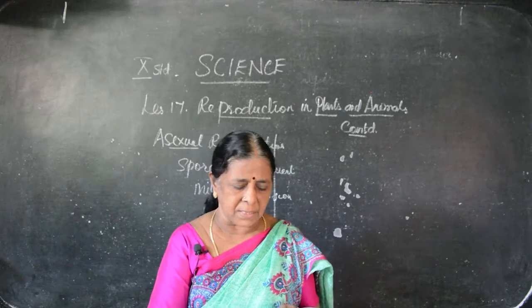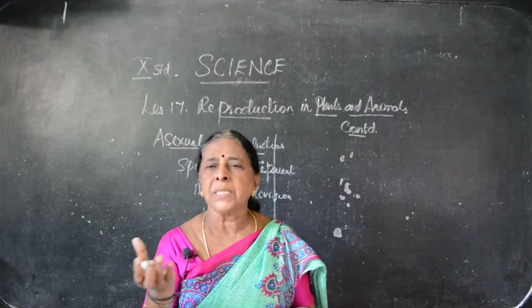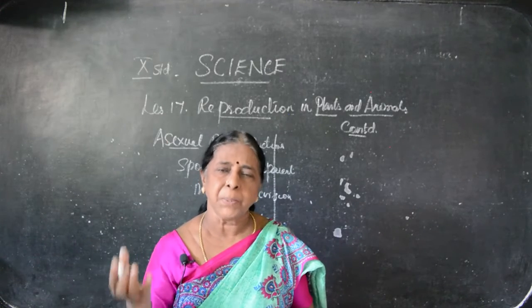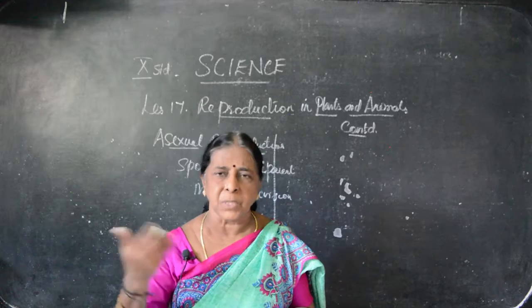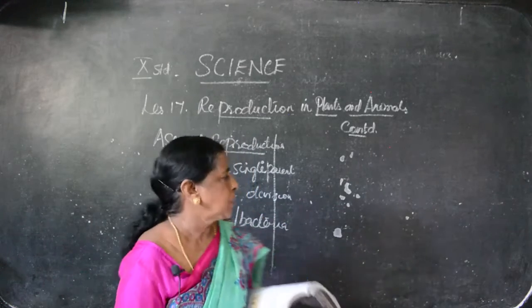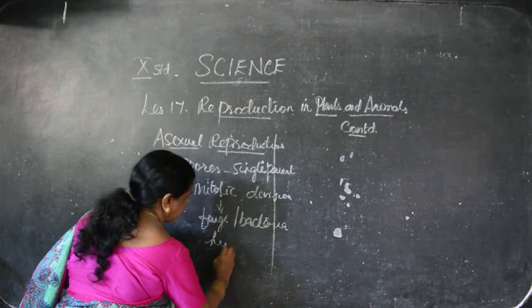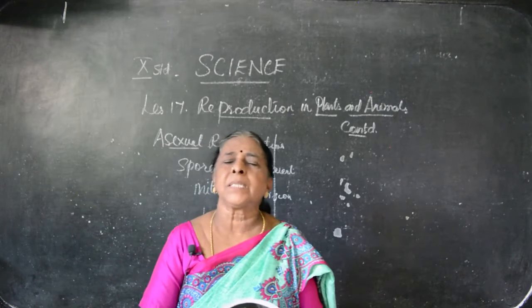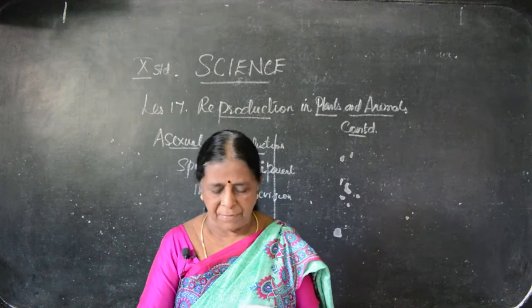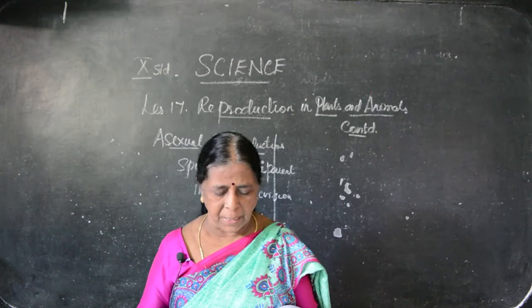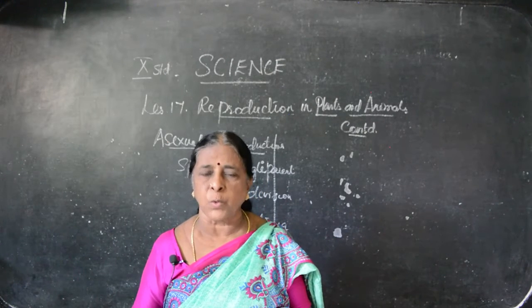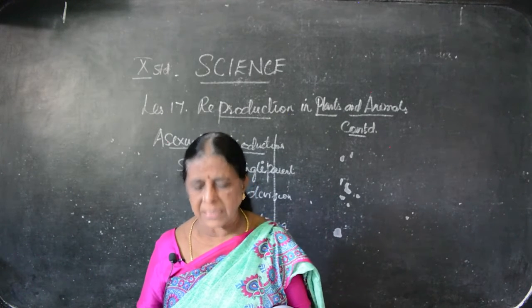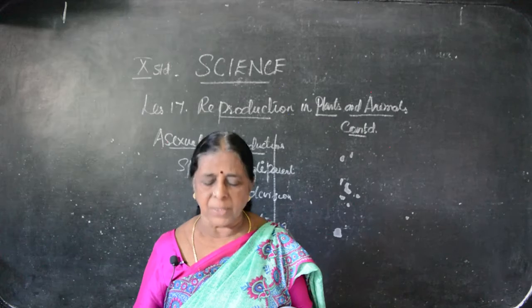During spore formation, a structure called sporangium develops on the fungal hypha. Seeds form in a spherical shape — the spherical structure is the sporangia. From the sporangia, spores are released and they develop into a hypha. For example, spore formation in Rhizopus — it is a fungi. The spores are released from the sporangium and the mycelium or hyphae develop.